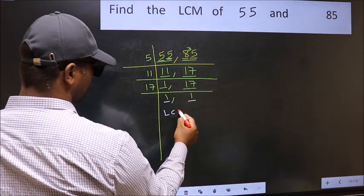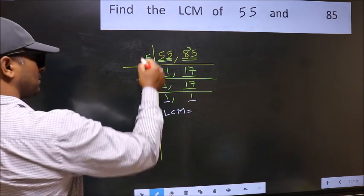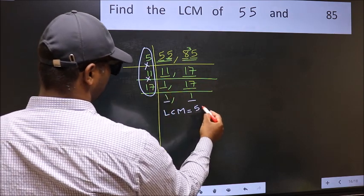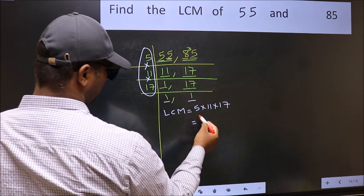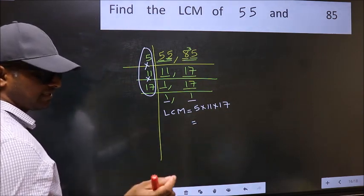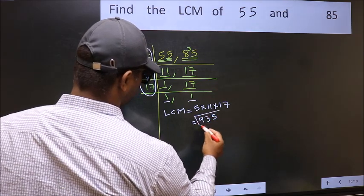So our LCM is, LCM is the product of these numbers, that is 5 into 11 into 17. When we multiply these numbers, we get 935, is our LCM.